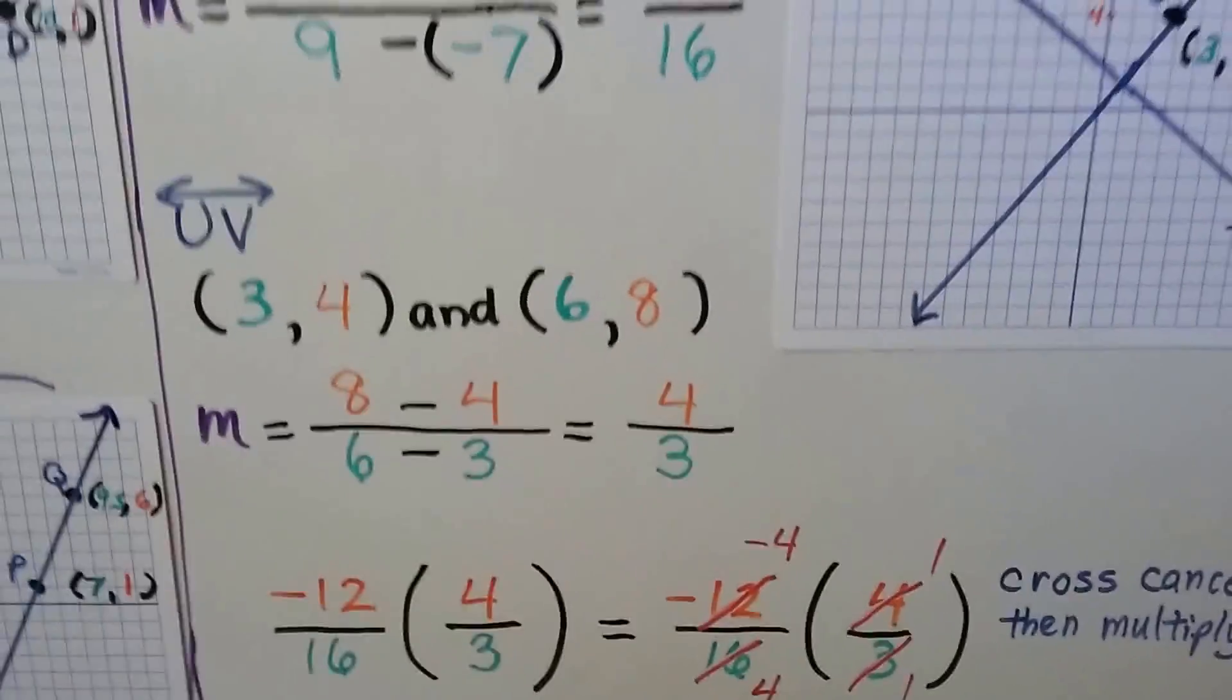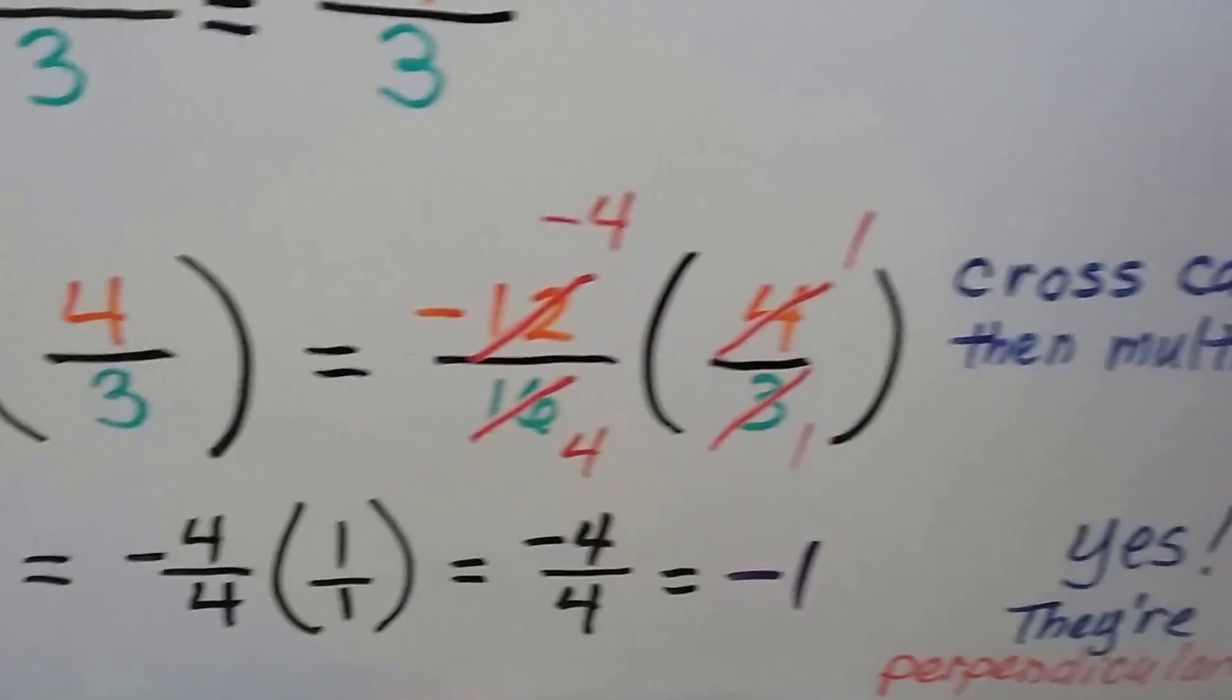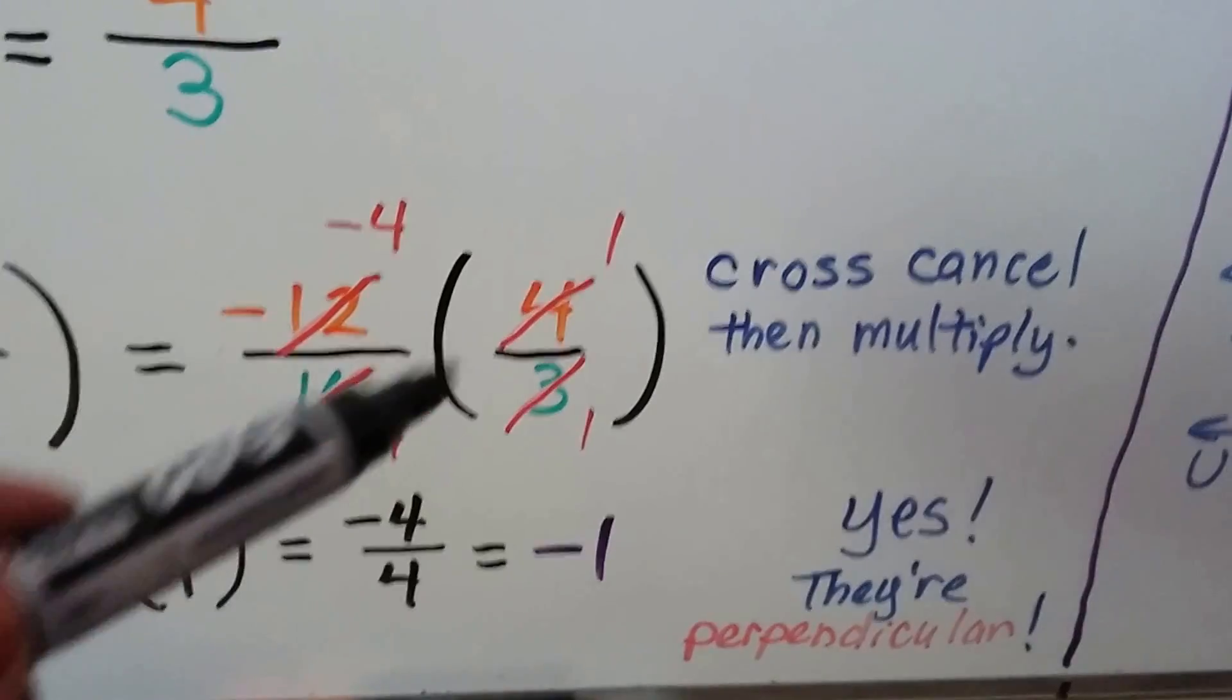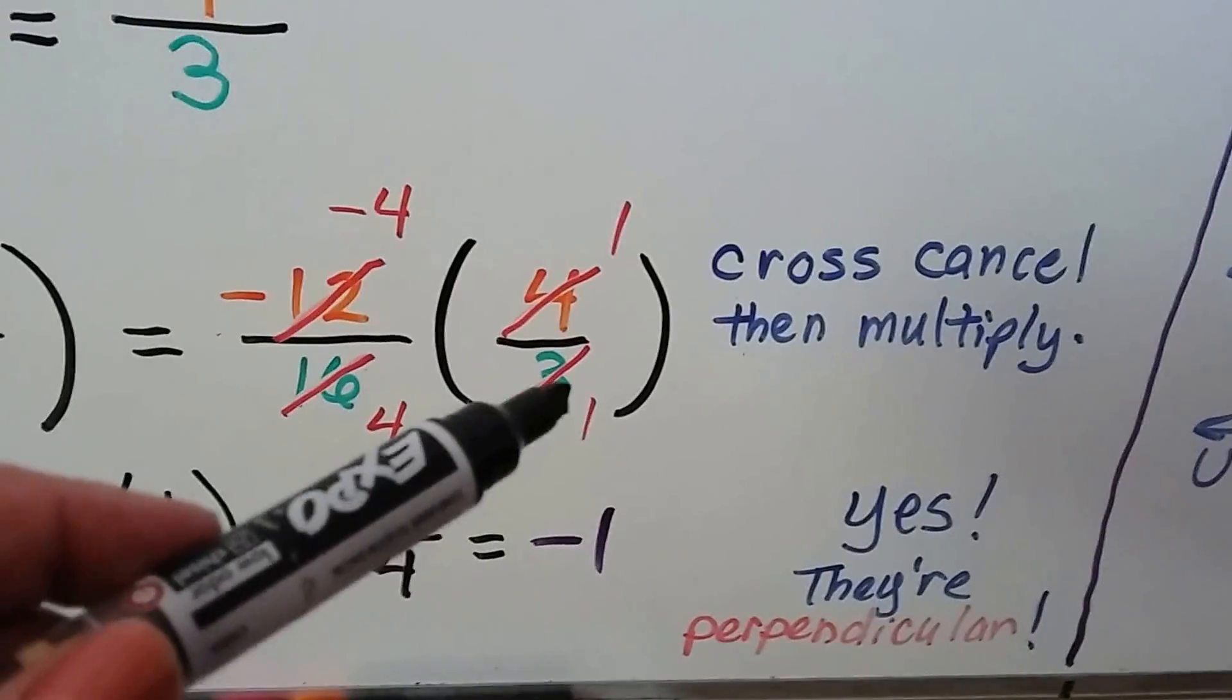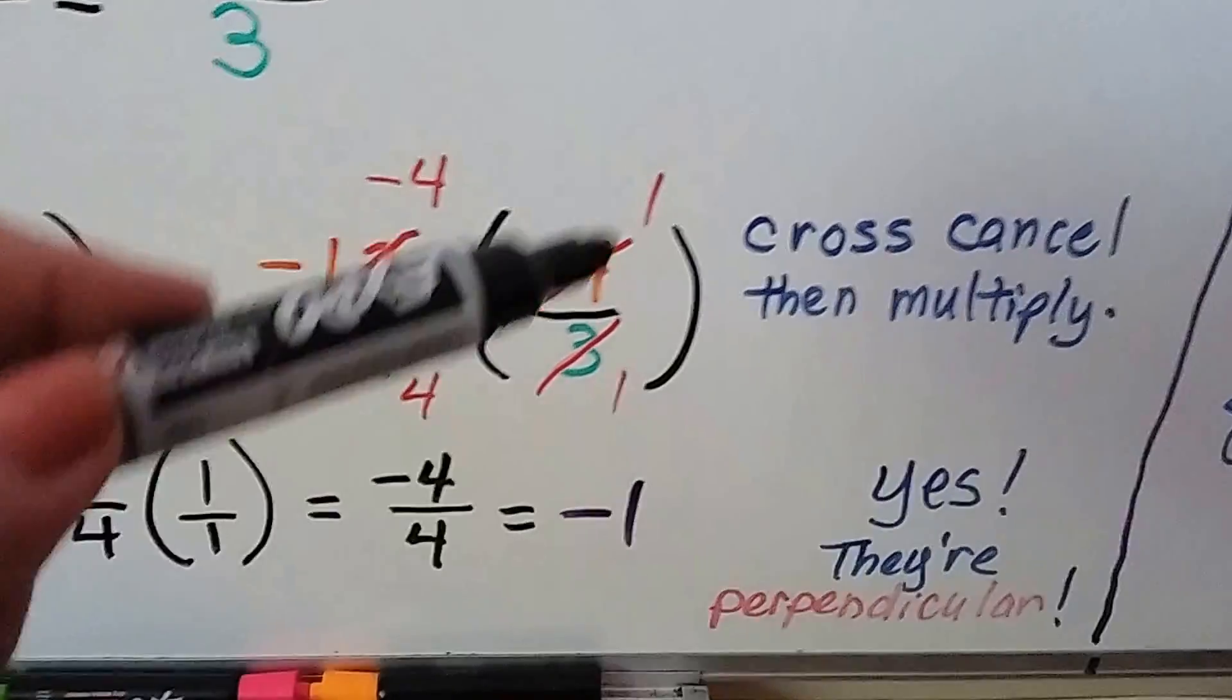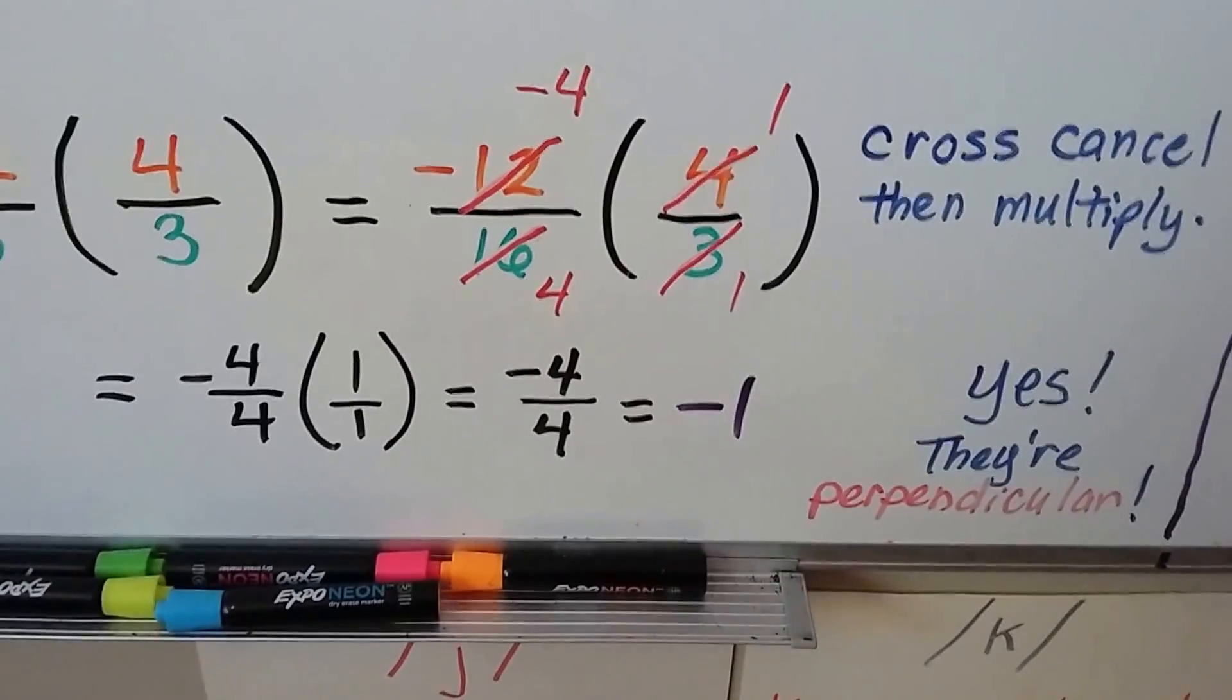Now we take the -12/16 and the 4/3. We multiply them together. We can cross cancel, can't we? We can say there's one 4 here and there's four 4s here. So we have a 1 and a 4, and we cancel out the 4 and the 16. And here we have one 3 and we have a -4 here. So really, we're doing -4/4 over 1/1.